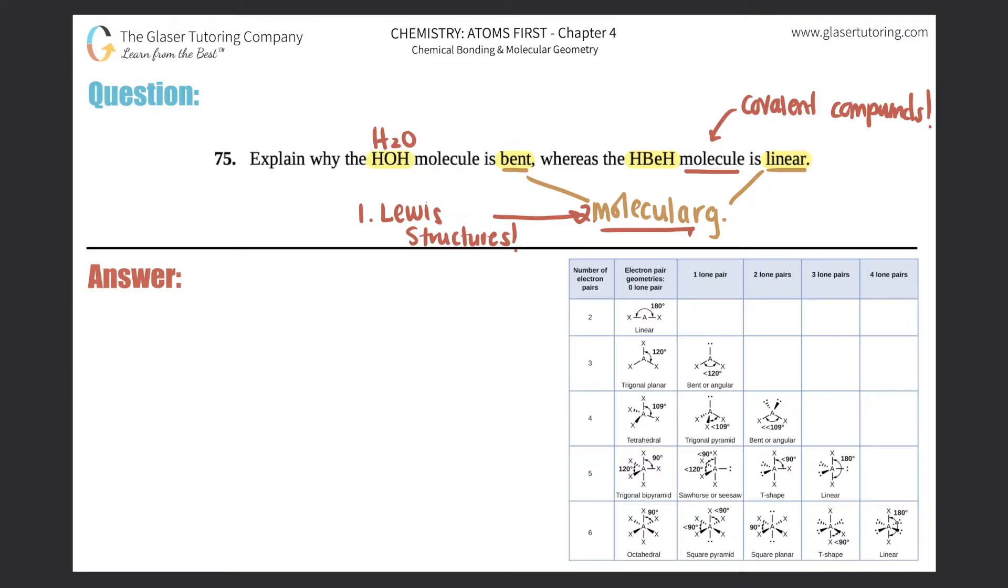I'm just going to give you the Lewis structures here. For H2O or HOH, your Lewis structure should look like this: one oxygen in the middle surrounded by the two hydrogens, and the oxygen should have two lone pairs. As opposed to H2Be or HBeH, it would be just beryllium in the middle surrounded by two hydrogens, and in this case there is no lone pairs.